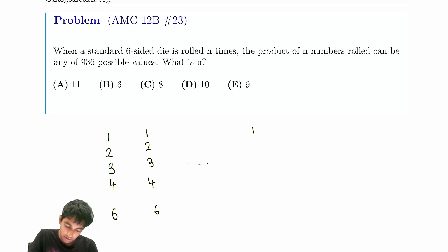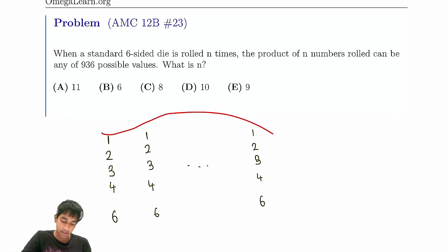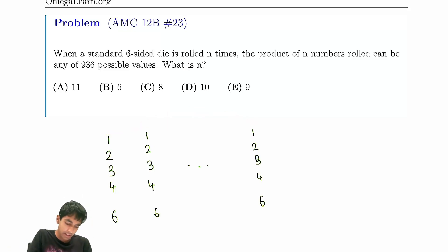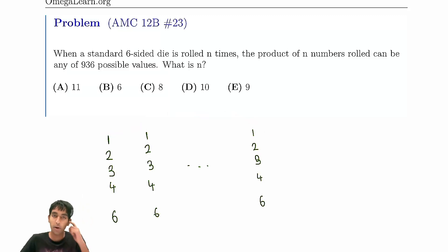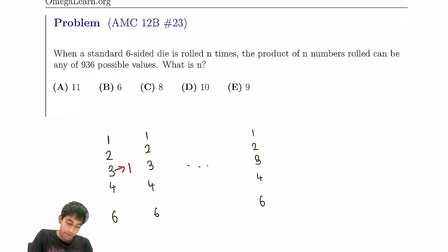You have n of these values. What are the possibilities — how many different products can you have with n dice? We're ignoring 5 because everything else is expressible as powers of 2 and 3: the values are 1, 3, 4 (=2²), and 6 (=2×3). The key observation is that 1 has no prime factors, 3 has one prime factor, 4 has two prime factors, and 6 has two prime factors.